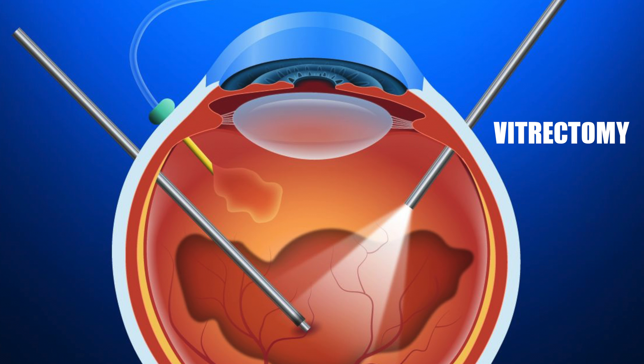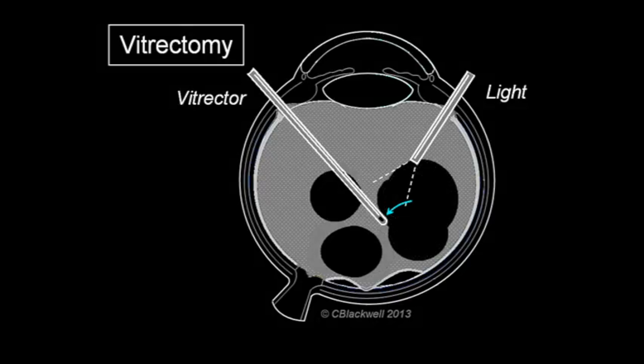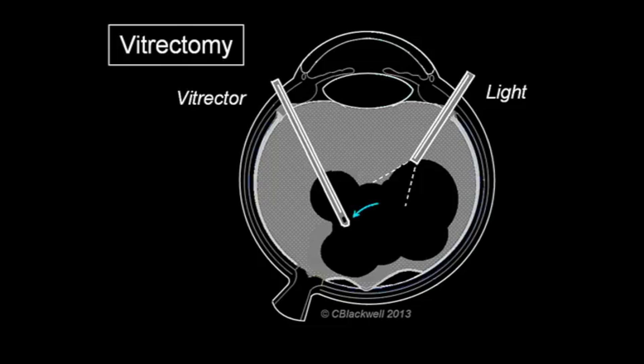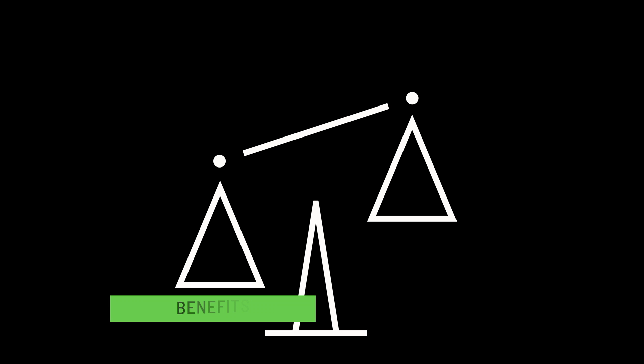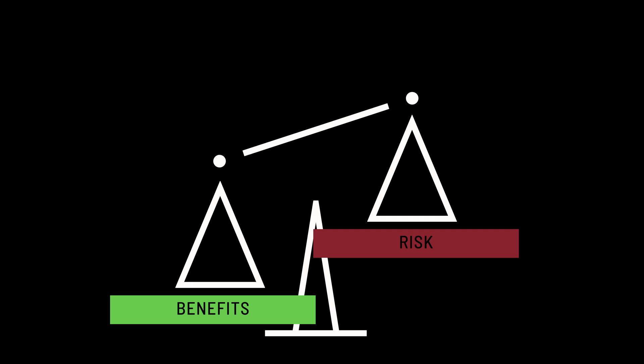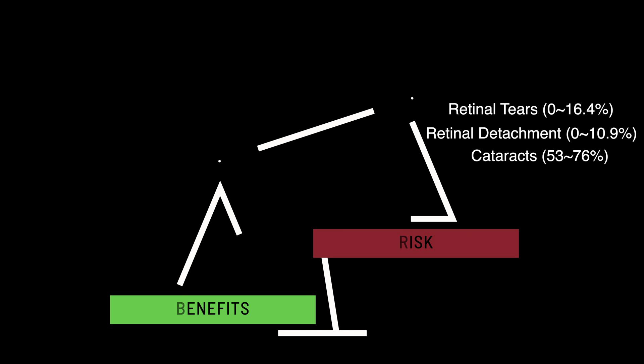Another option is vitrectomy — the removal of the vitreous altogether. The success rate is reported to be very high and predictable, and sometimes vision even improves after having it done. If it's the collagen fibers causing the shadows and disrupted vision, then just remove the vitreous altogether — sounds like a no-brainer, right? Wrong. Every surgery comes with its own risks. Surgeons must decide whether the benefits outweigh the risks. The most common risks following a vitrectomy are retinal tears, retinal detachments, and most commonly, cataracts. If the risks far outweigh the benefits, then it's probably not worthwhile doing the vitrectomy. Consult your eye doctor to see what the best option would be for your unique situation.